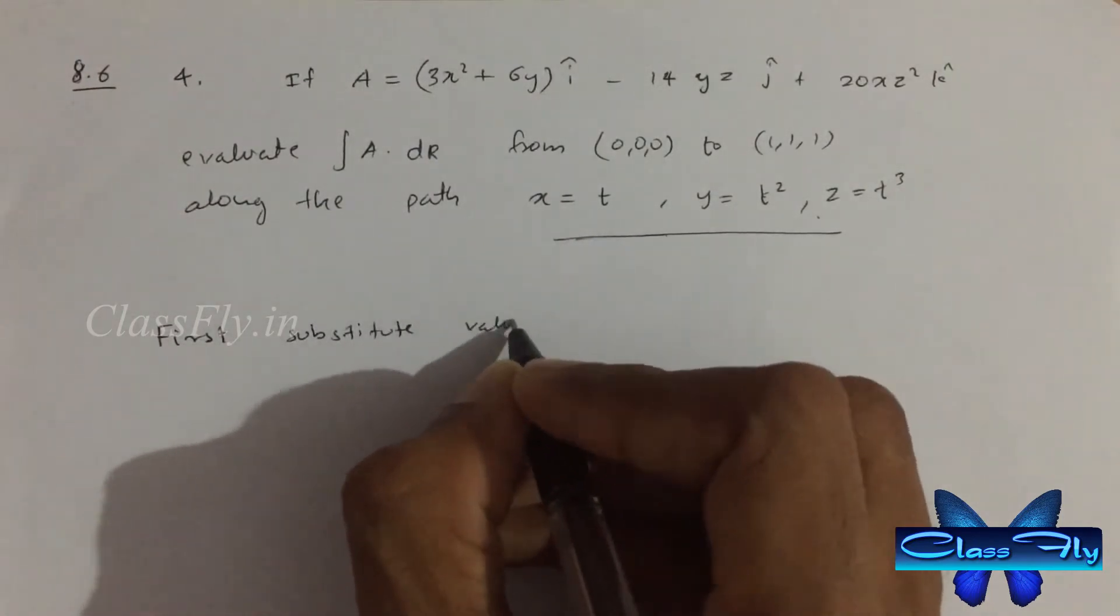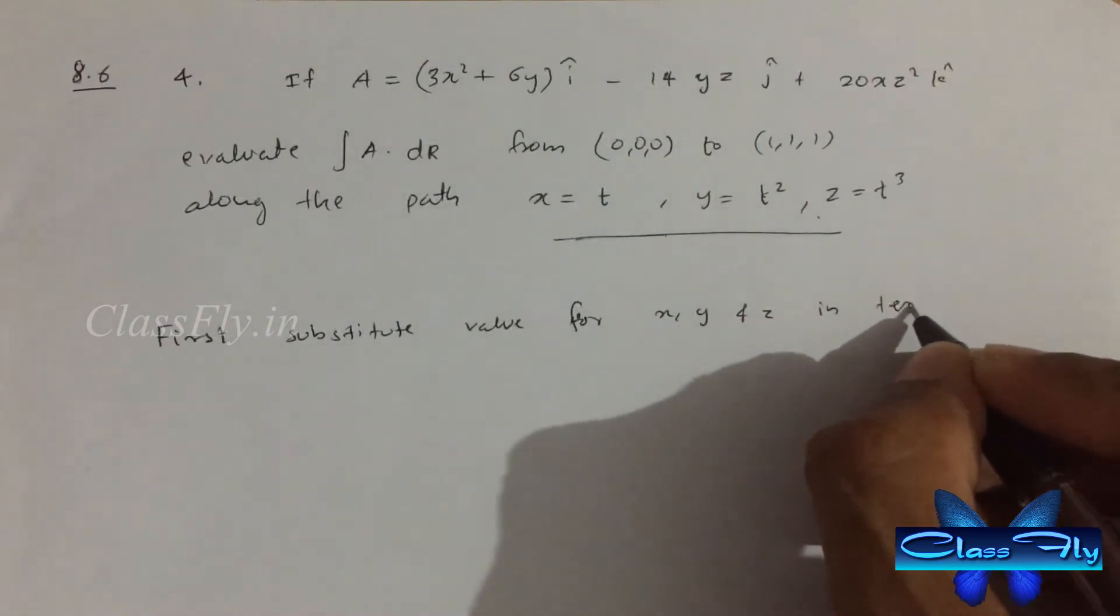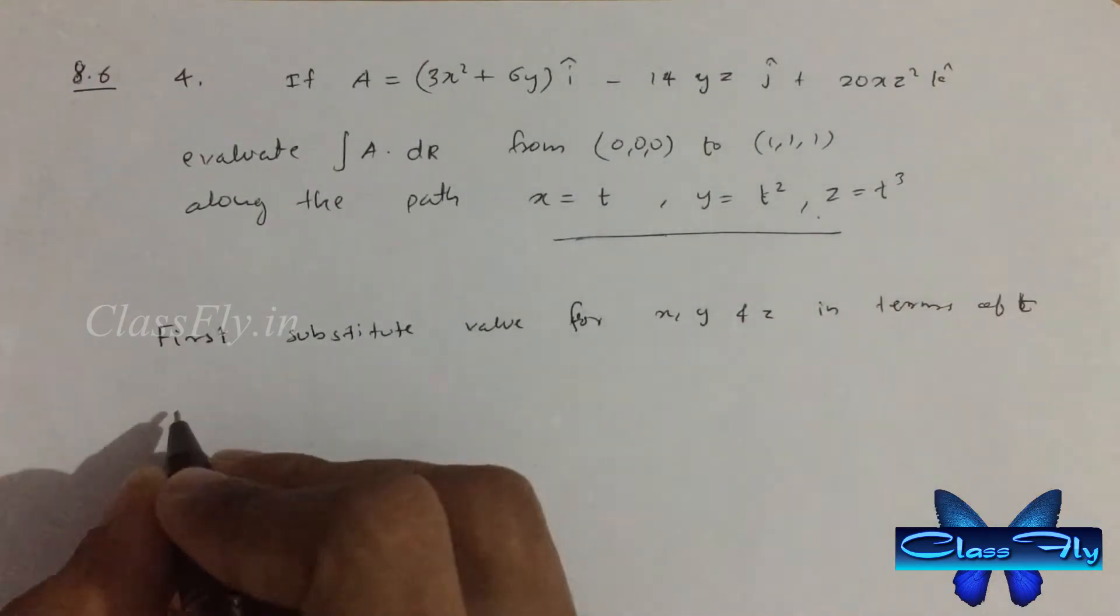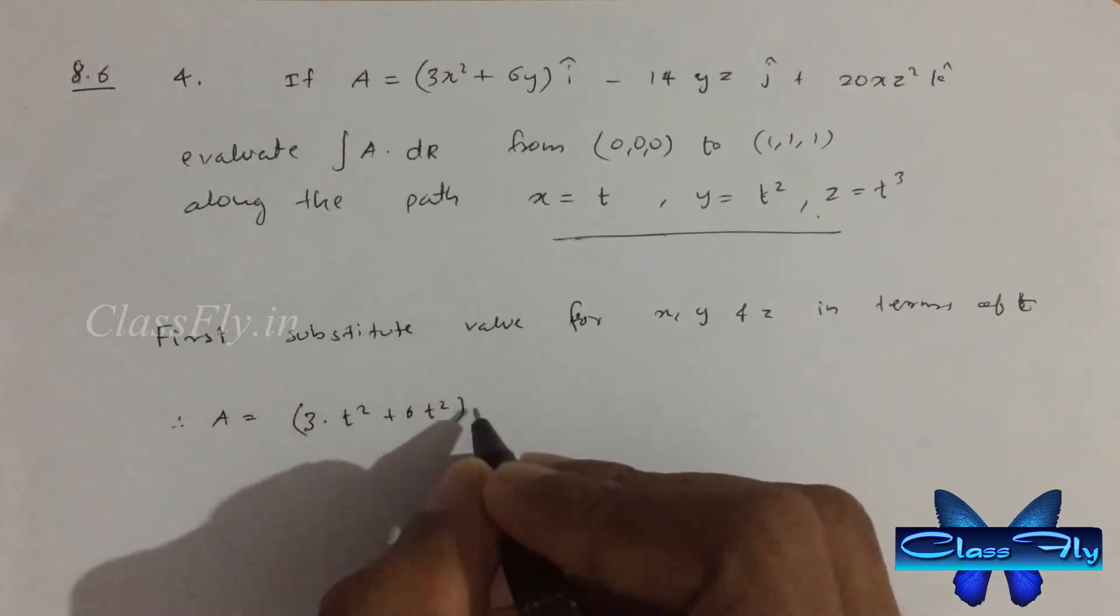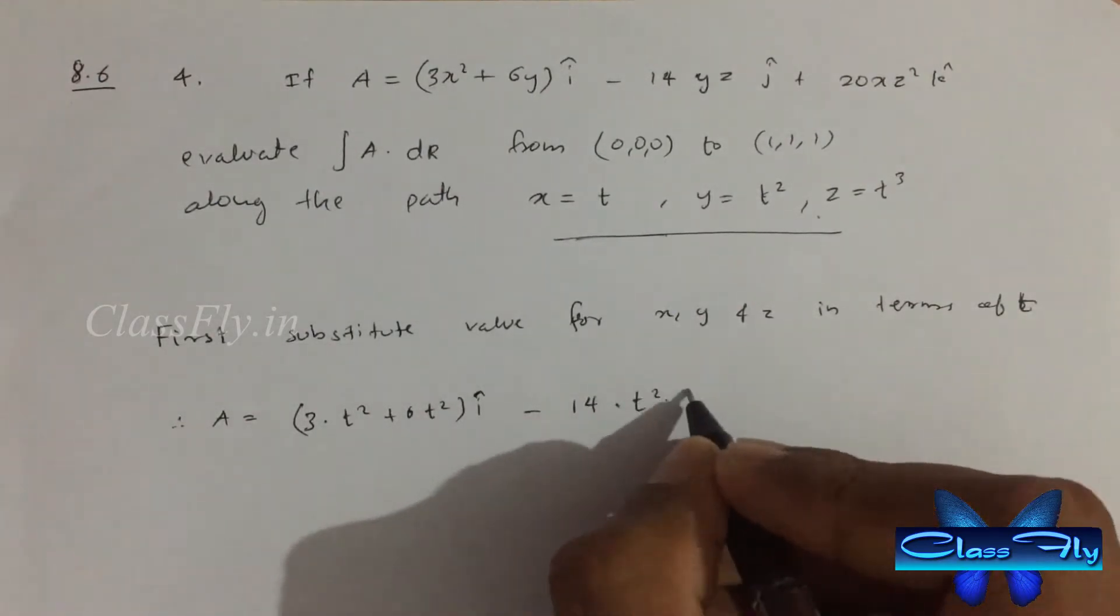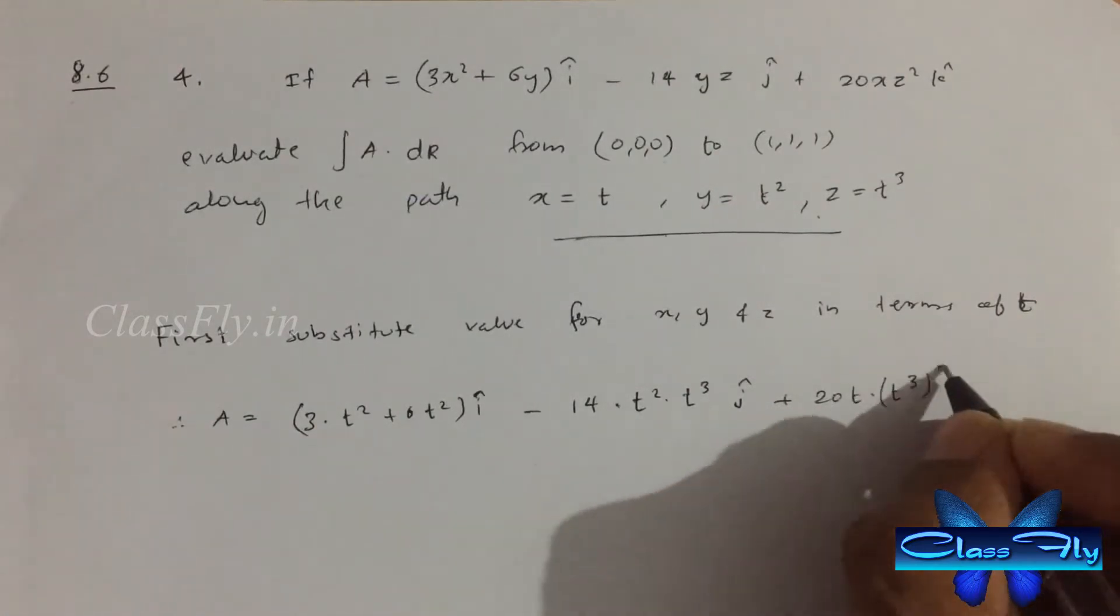First, substitute for x, y, and z in terms of t. Therefore, A equals 3 into t square plus 6t square i cap minus 14 into t square into t cube j cap plus 20t into t cube whole square k cap.